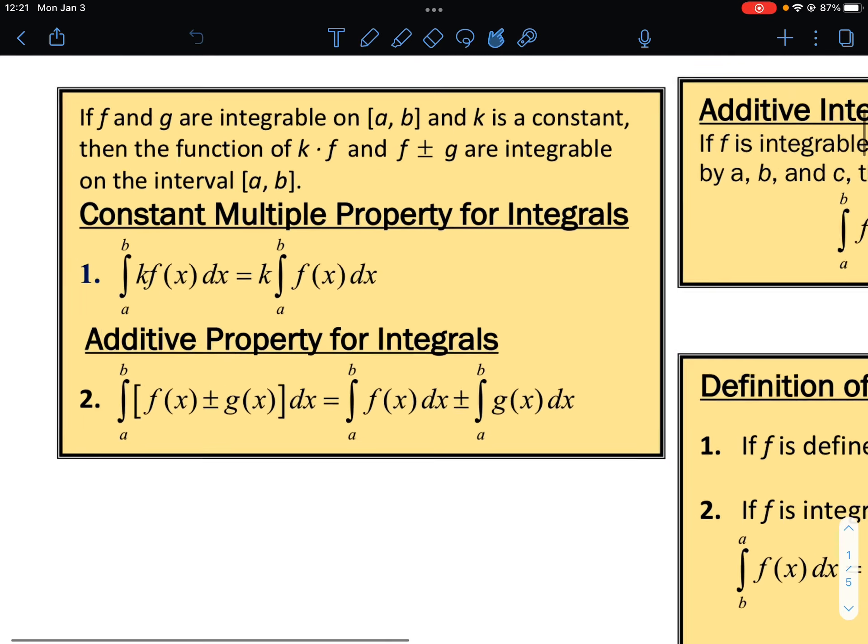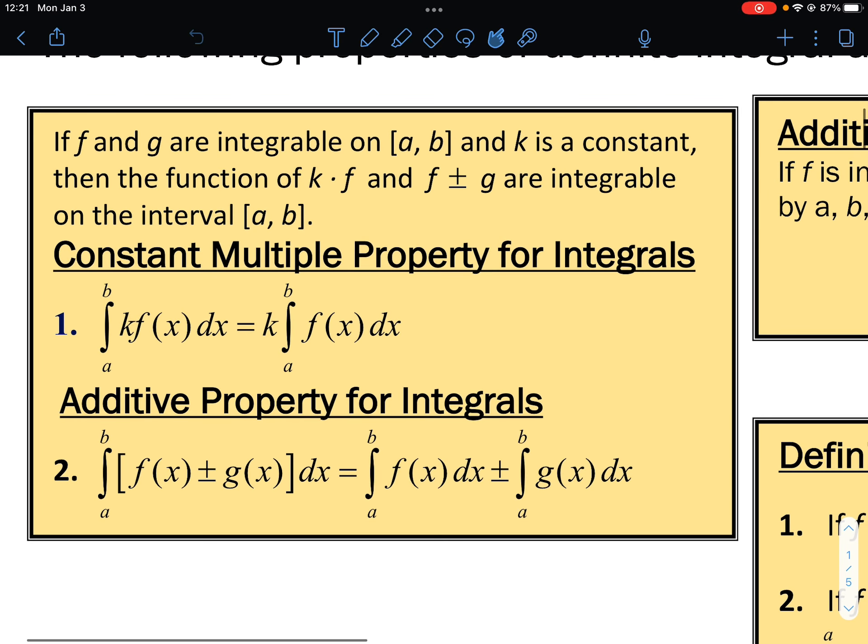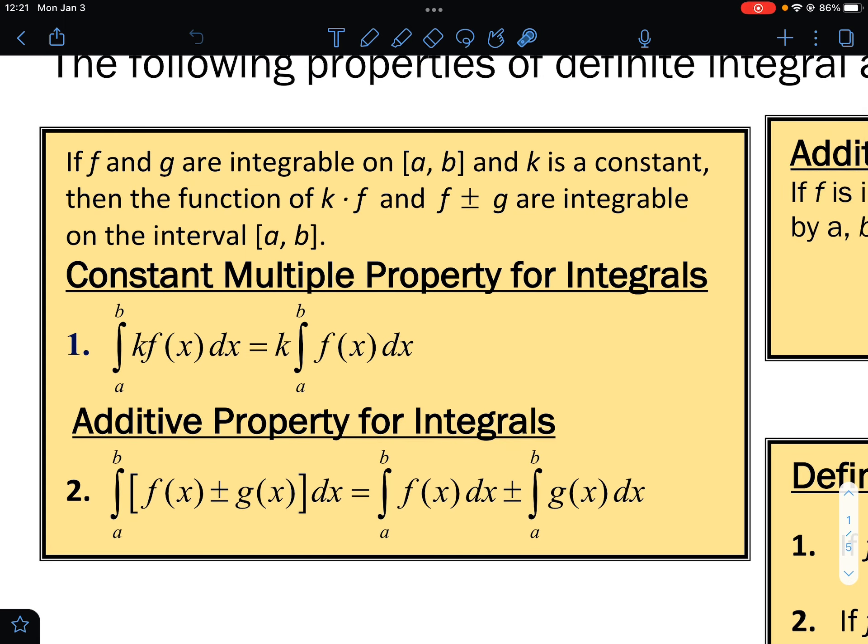The first one, the constant multiple property for integrals. If we have the integral from A to B of K times a function, we can simply take that K value and bring it out in front of the integral, thus making it K times the integral from A to B of the function.